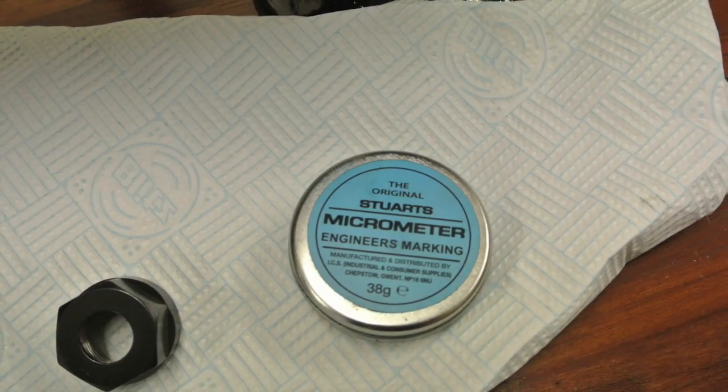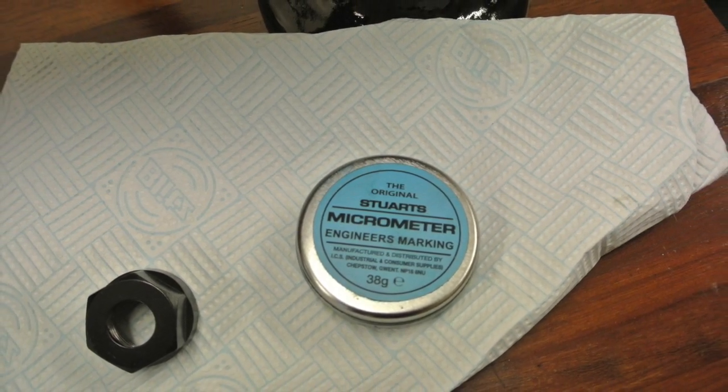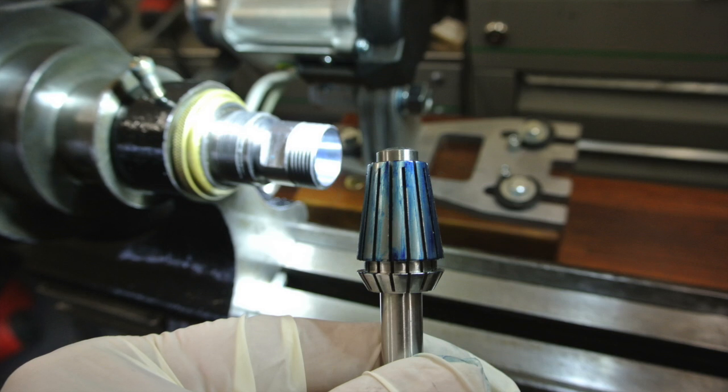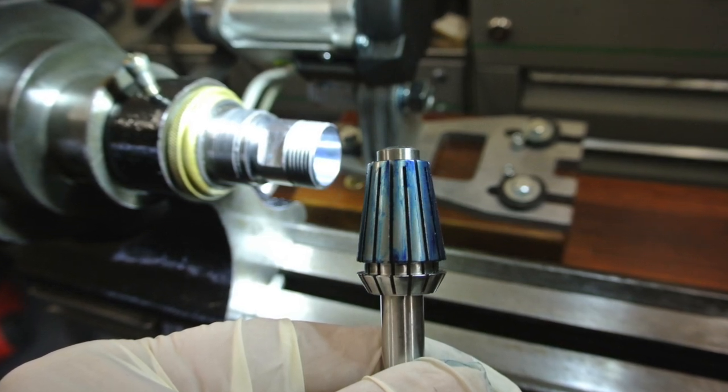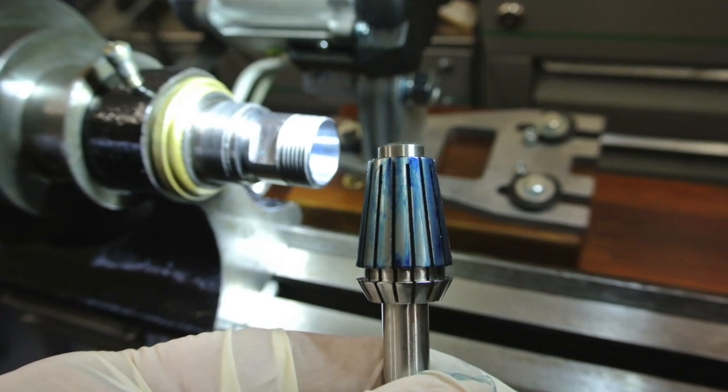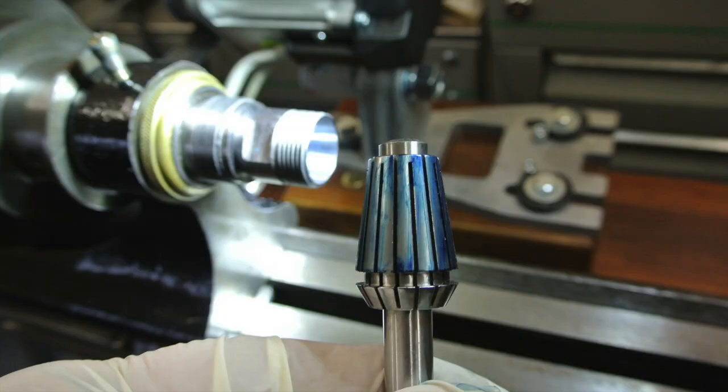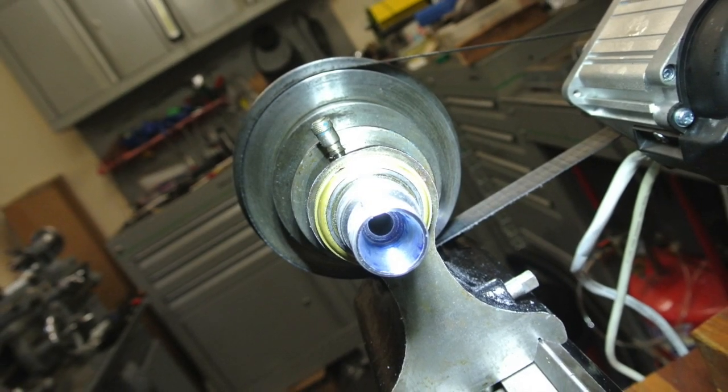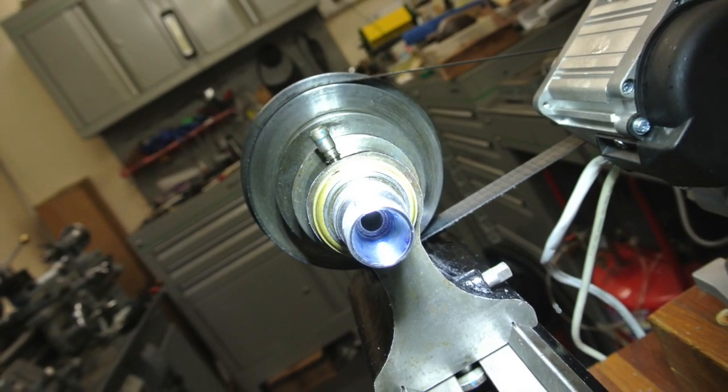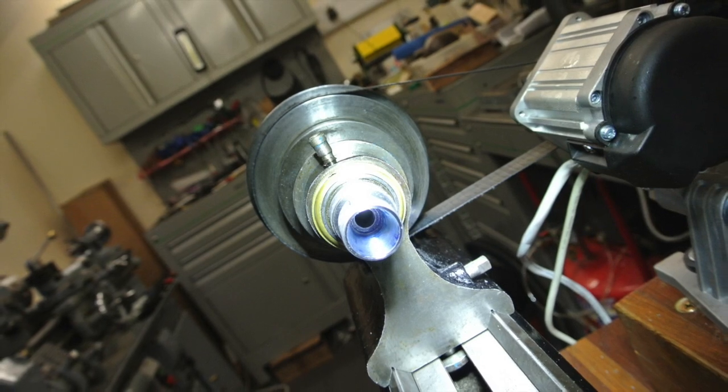A check can now be made using micrometer engineer's blue. This is coated very thinly on the outside of the collet, and is then inserted into the cone. Rotating it slightly leaves a film of blue on the high spots, and shows where more metal needs to be removed, in this case at the back.